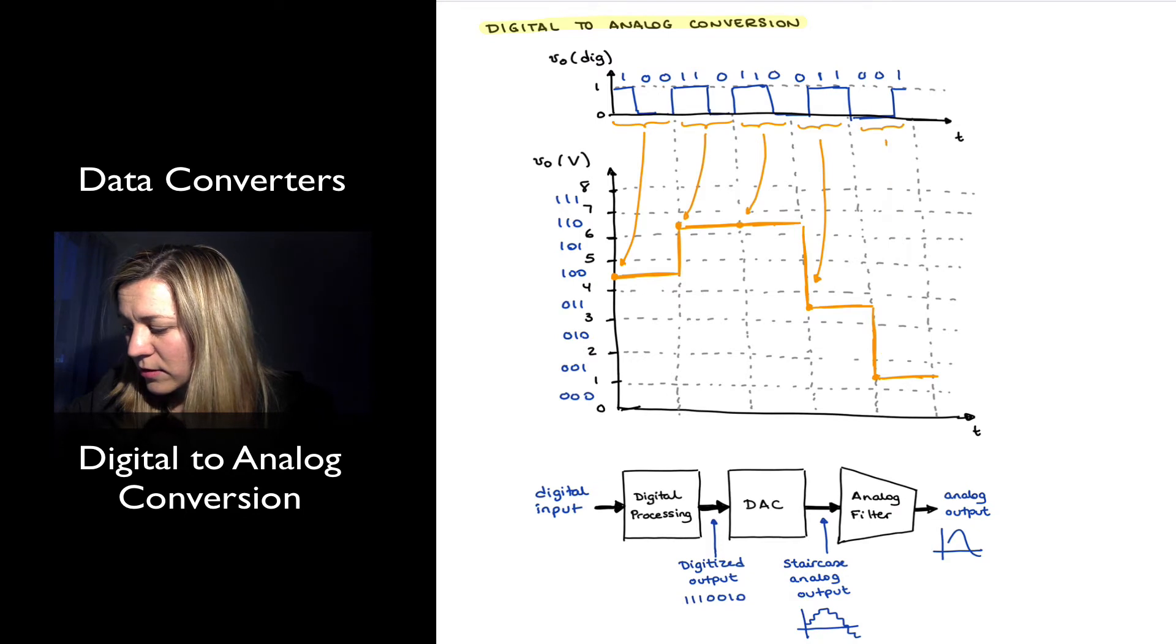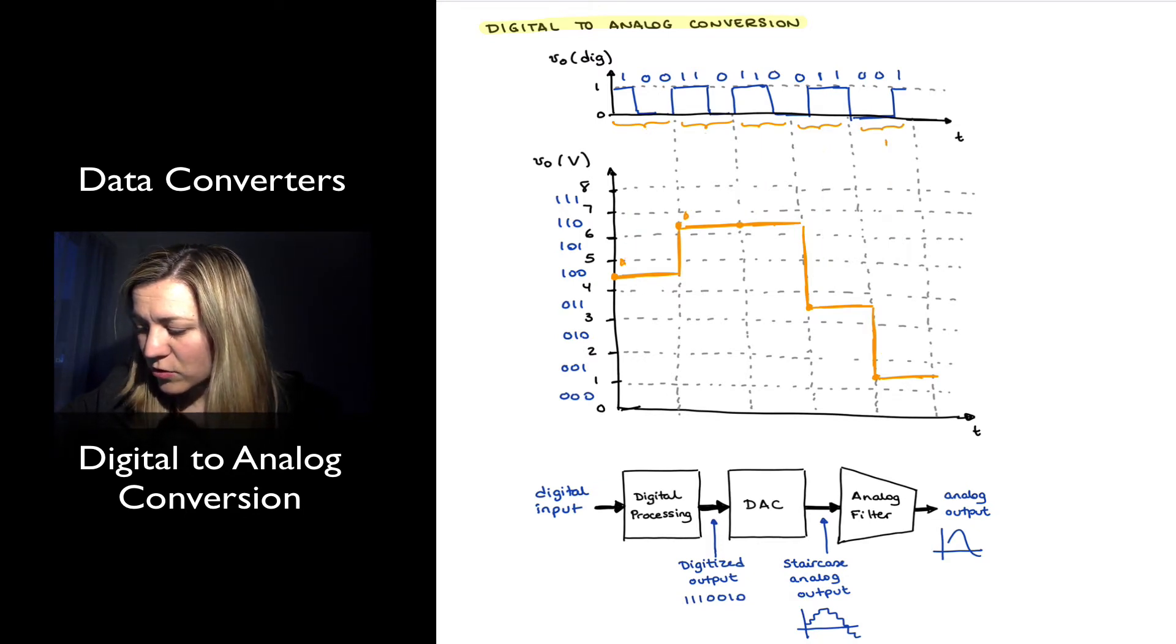I'm going to delete some of these arrows, so they don't interfere. So this is my staircase reconstruction. Now this does not look like the analog signal that I'm expecting. And the idea is that at the end of the DAC process, I run the signal through an analog filter, which is basically another low pass filter, which is going to smooth out the signal.